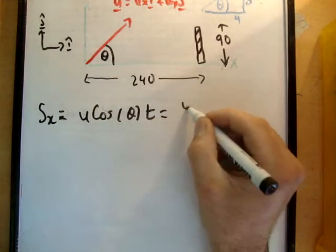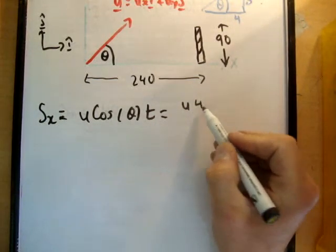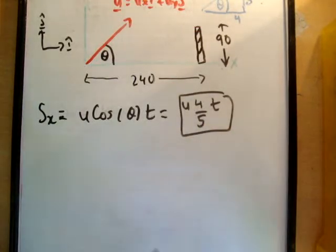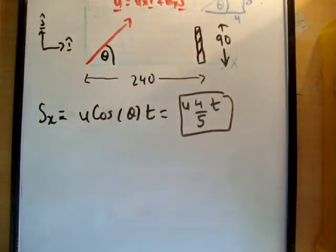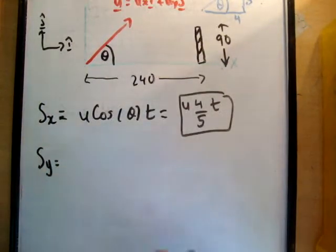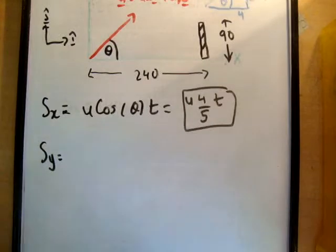So s sub x is equal to u times 4 over 5 times t. So 4u times t over 5. Next thing we're going to do is get s sub y. This is pretty straightforward again. So ut plus a half a t squared.